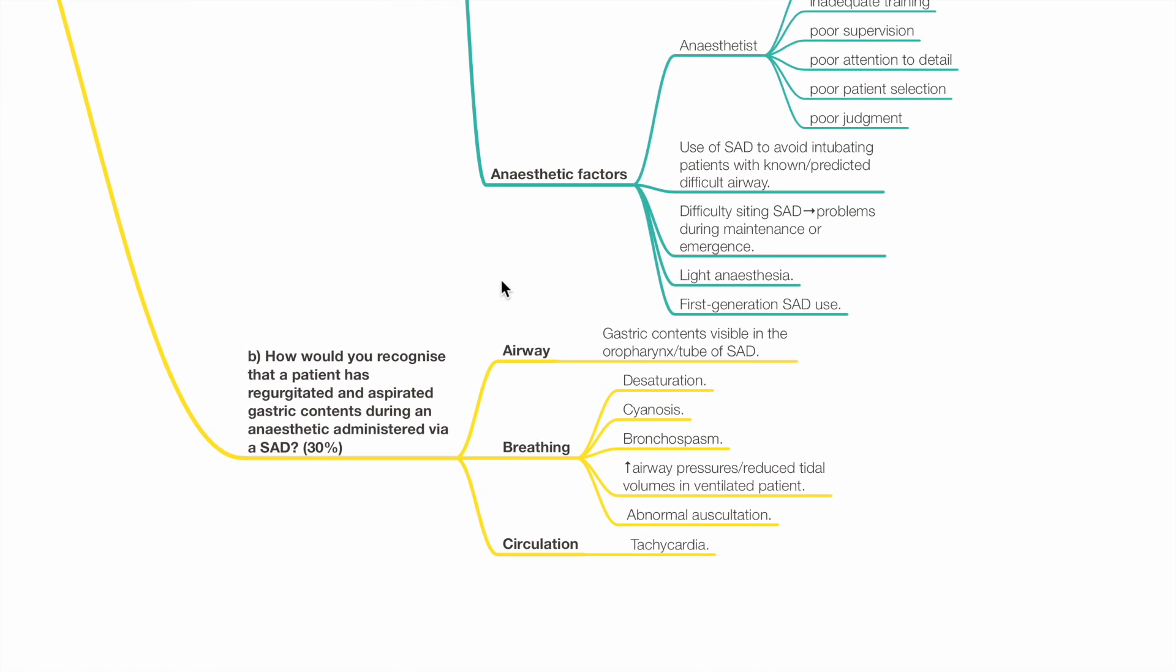How would you recognize that a patient has regurgitated and aspirated gastric contents during an anesthetic administered via a SAD? Airway: gastric contents visible in the oropharynx or tube of the SAD.